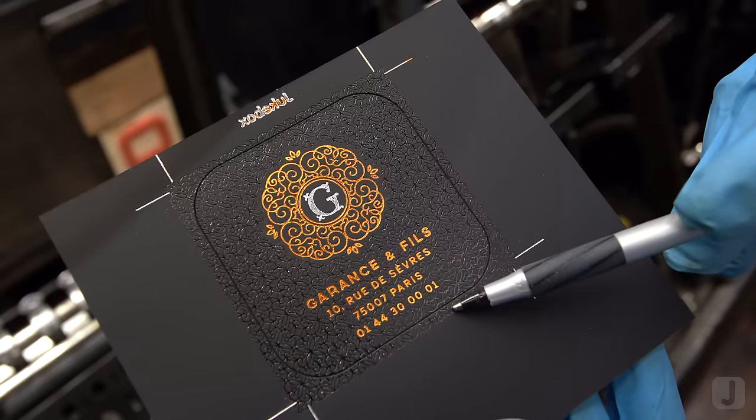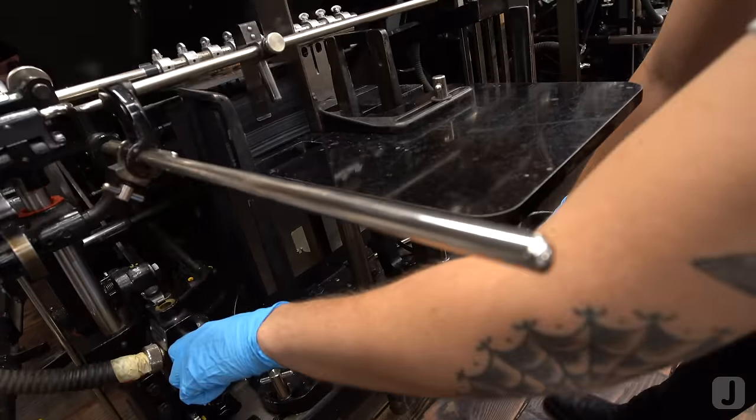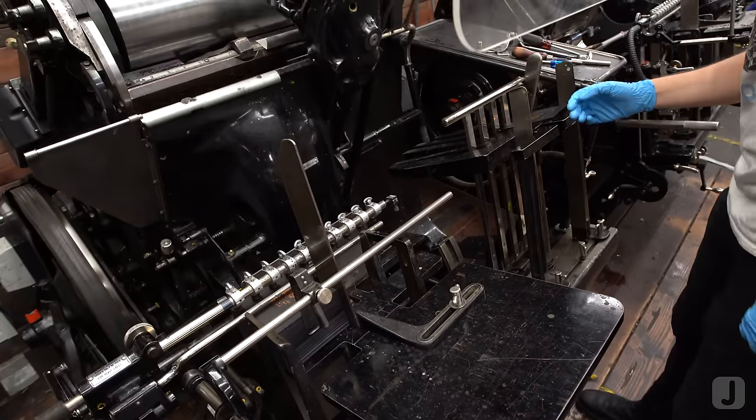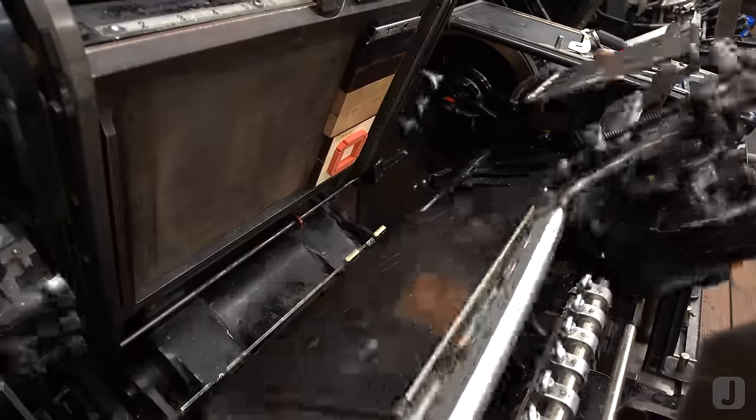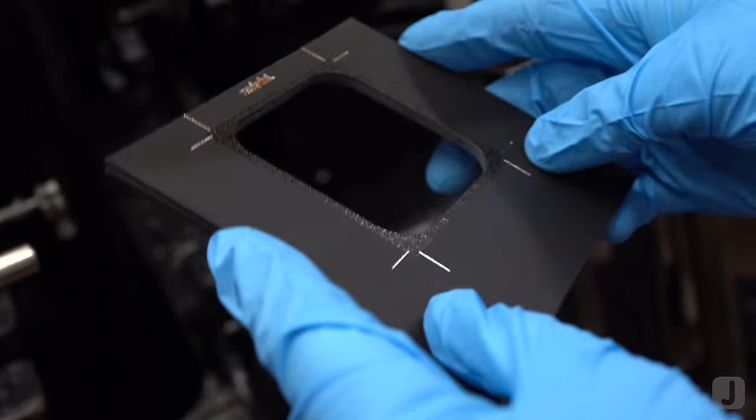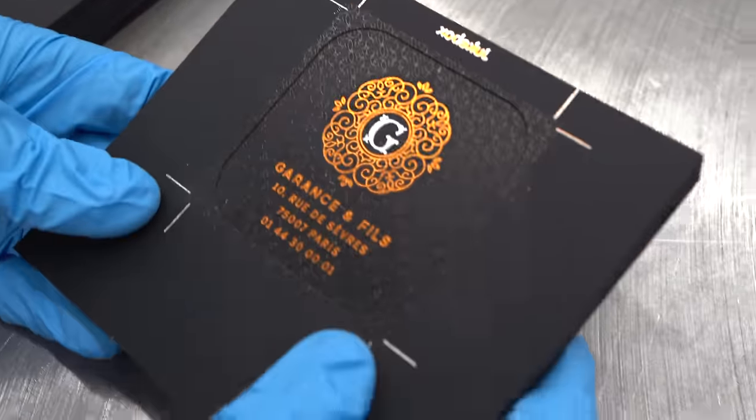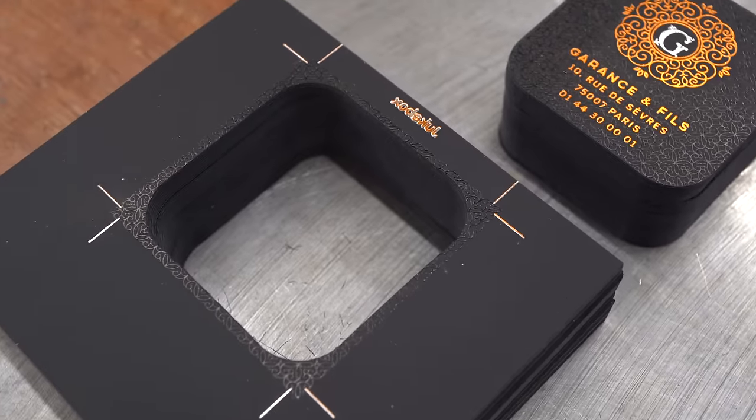This is also a good demonstration of why bleed is important. You can see how the artwork extends past the die cut line, which is always ideal. We check for any movement or miss registration in the sheets by looking at the shells that are removed. If they are all consistent, then the die cutting is consistent too.